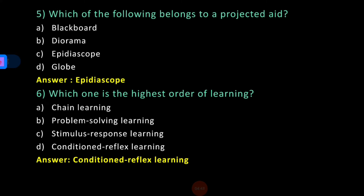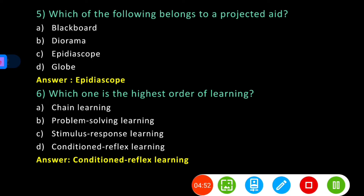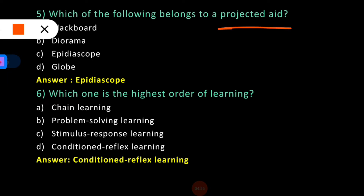The fifth question: Which of the following belongs to a projected aid? We have already discussed what is meant by a projected aid and a non-projected aid in previous sessions. The options are: (A) blackboard, (B) diorama, (C) Epidioscope, and (D) globe. Obviously, Epidioscope — option C — is the correct answer. Epidioscope is an example of a projected aid. Blackboard, diorama, and globe do not belong to that category.